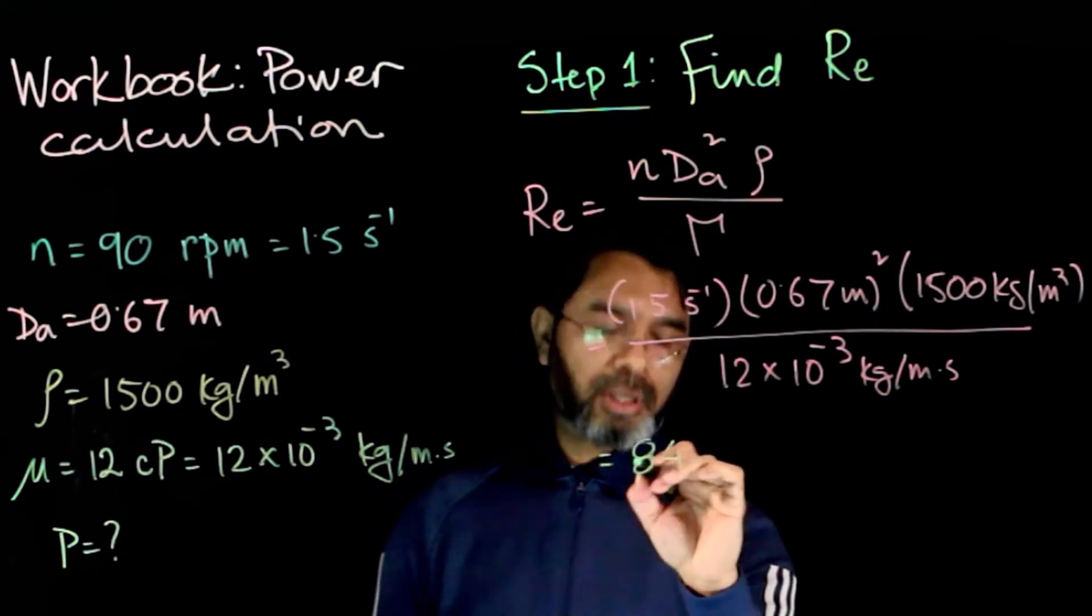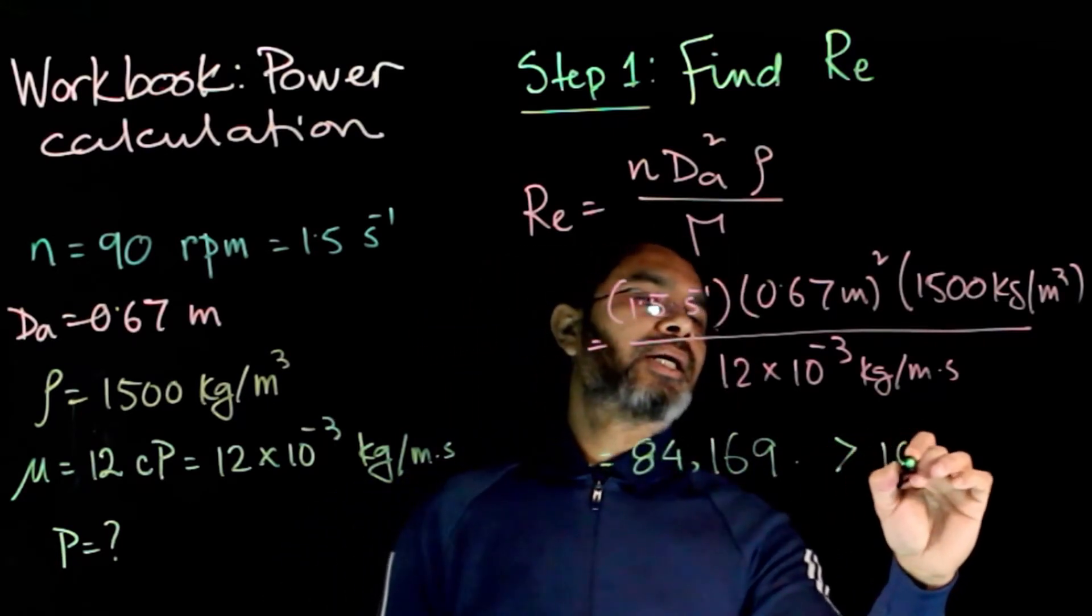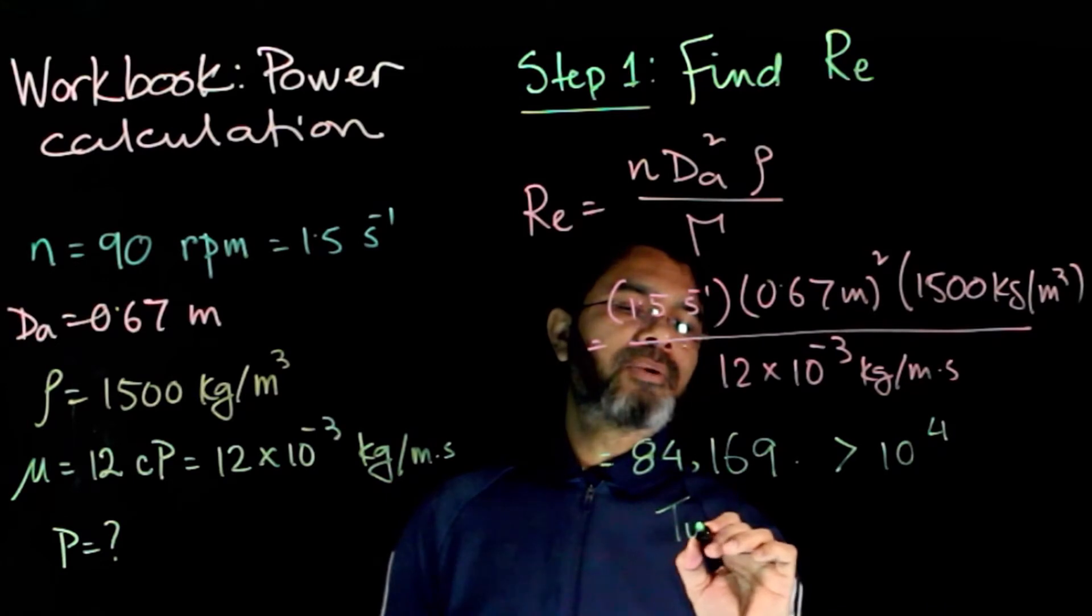You'll get the Reynolds number to be 84,169. We know that this value is greater than 10,000, so the flow is turbulent.